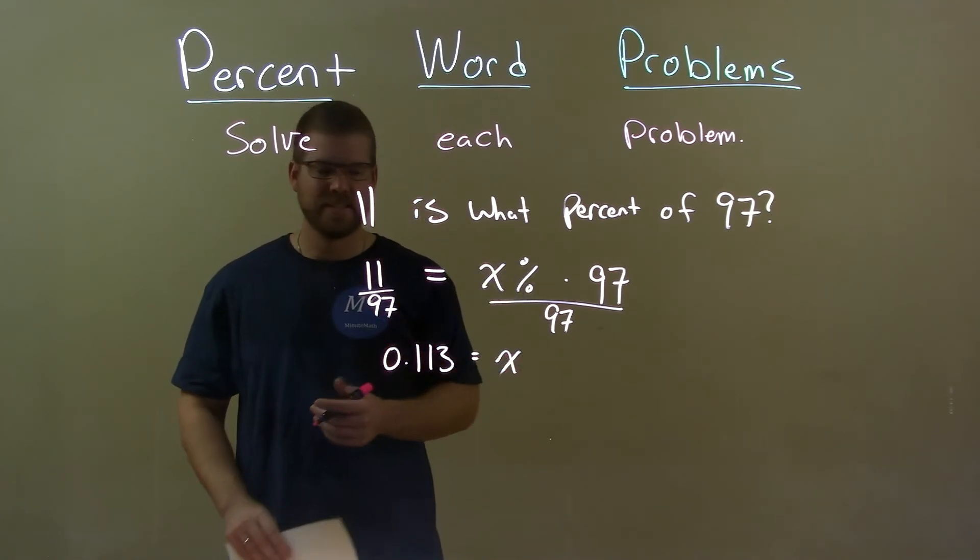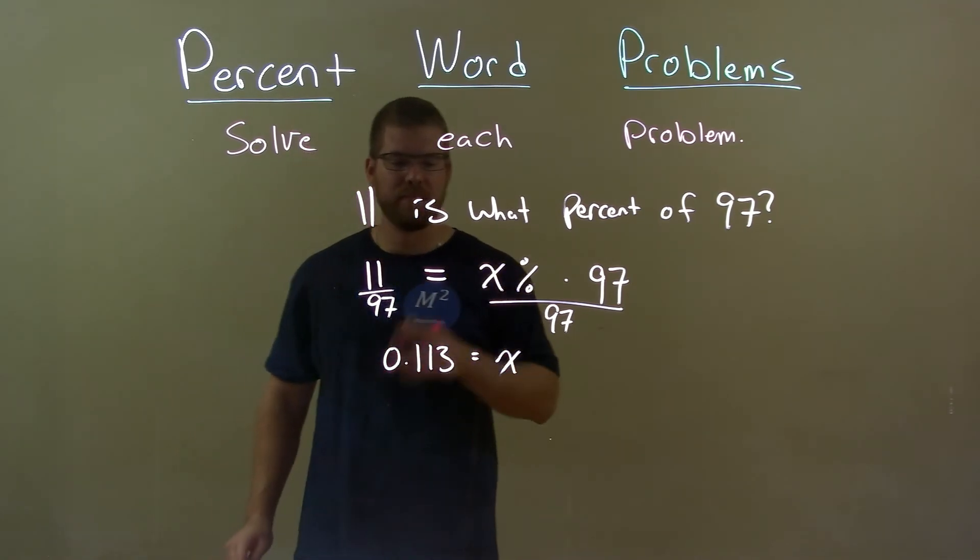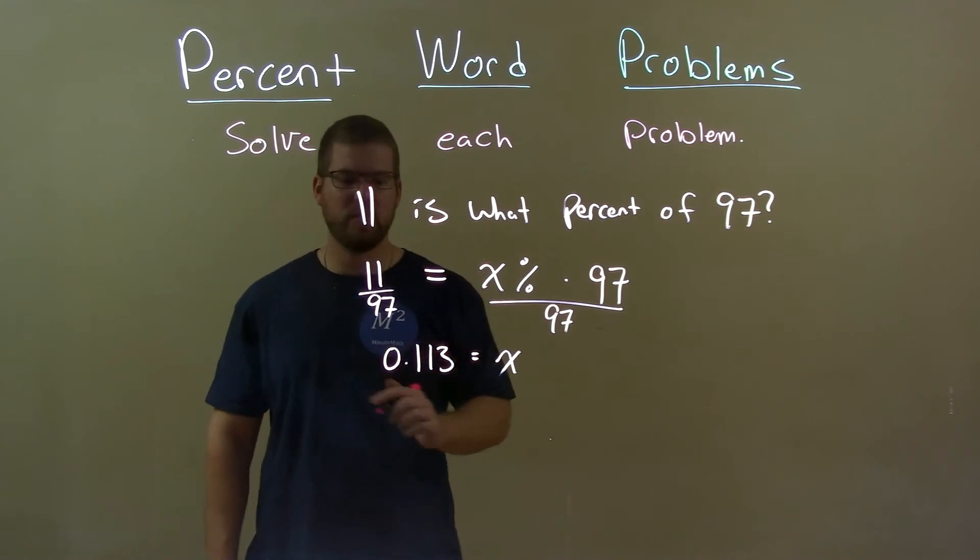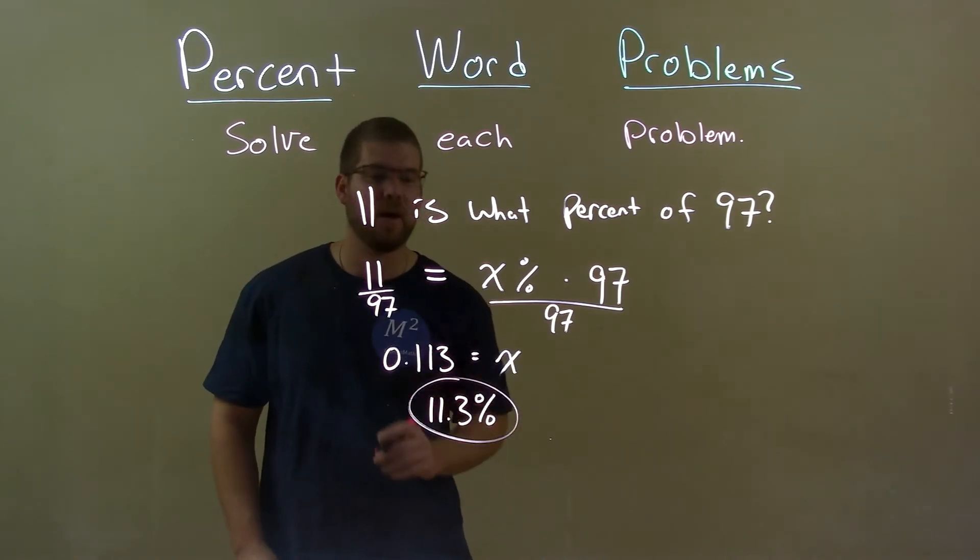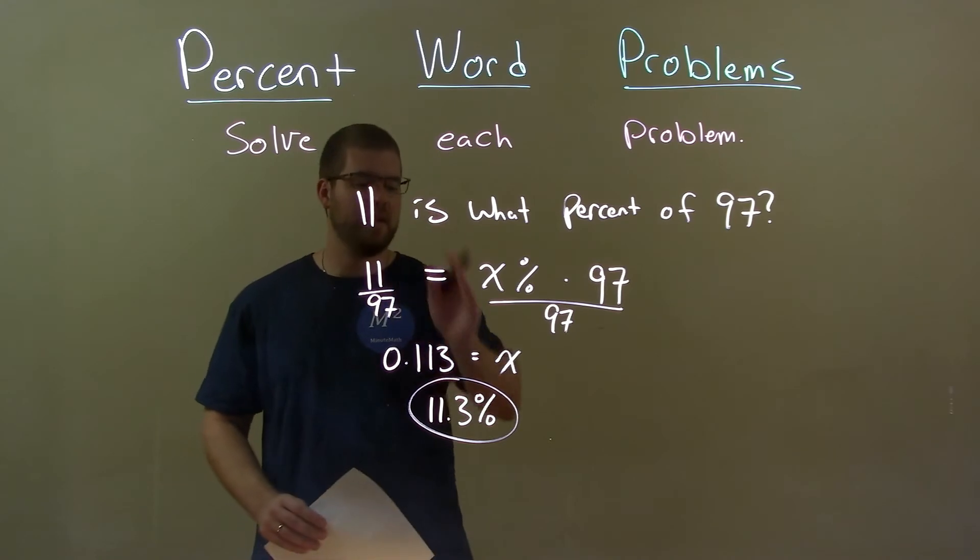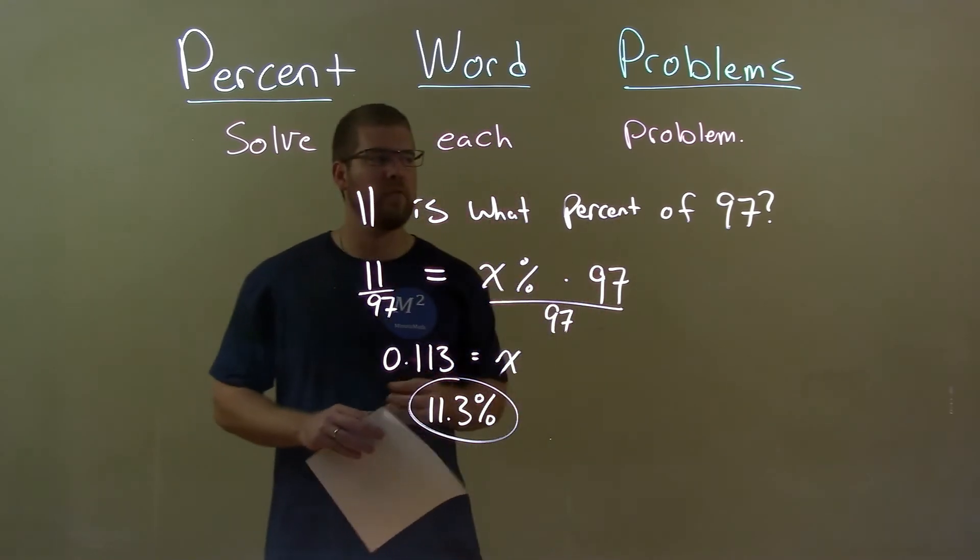We have a decimal, 11 divided by 97 is 0.113. Now convert that to a percent, move the decimal place two points to the right, so we have 11.3%, and there is my final answer. 11 is 11.3% of 97.